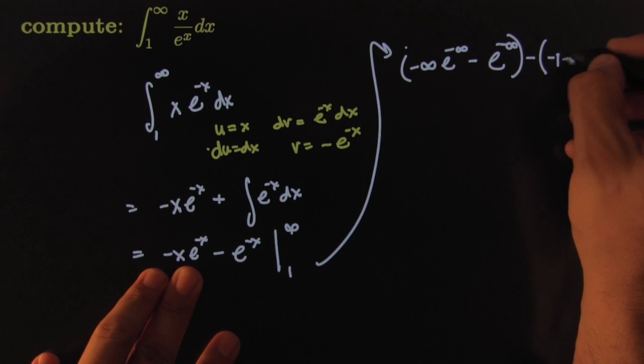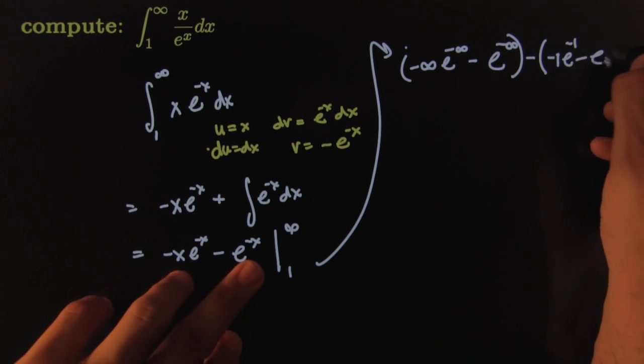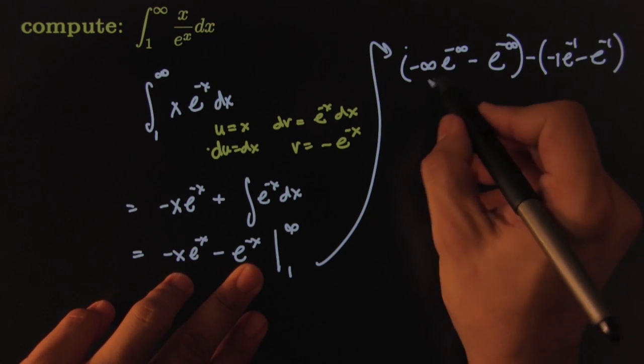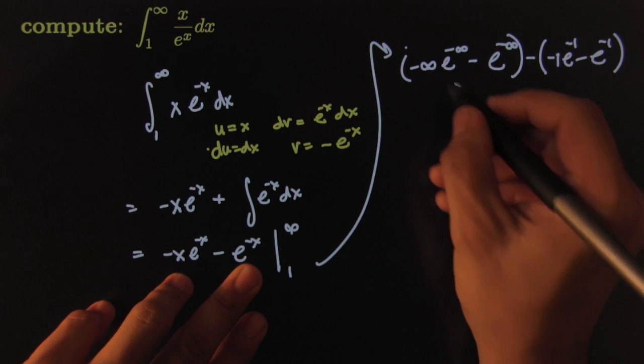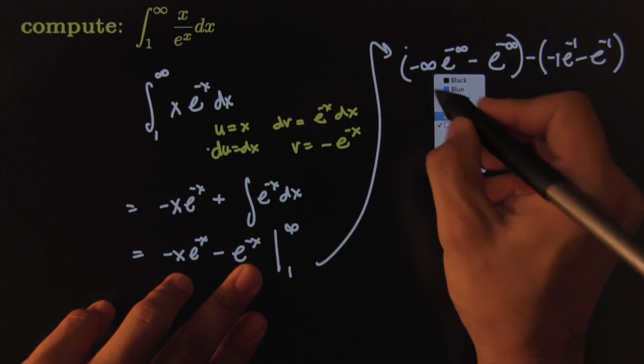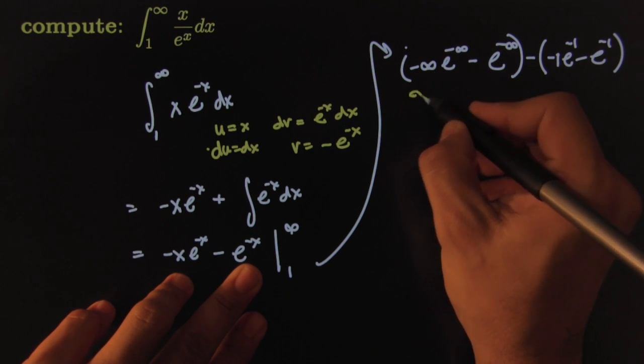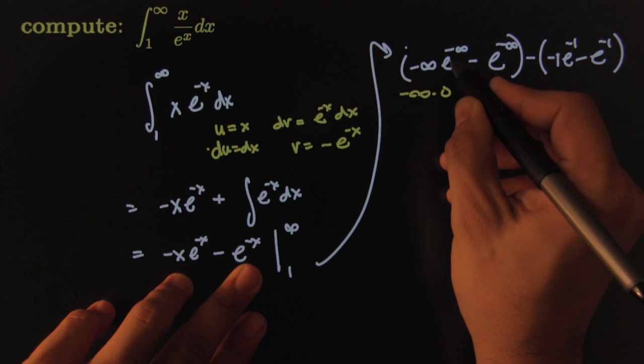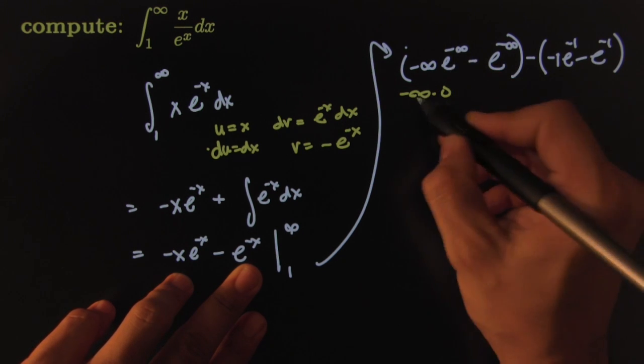Minus negative 1, e to the negative 1, minus e to the negative 1. Now here I'm going to have an issue because this becomes negative infinity times 0. Because if you would put this e on the bottom, it would be 1 over e to the infinity.